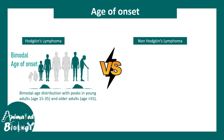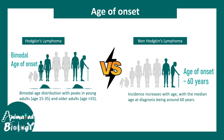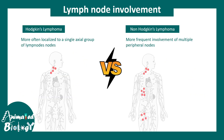Age distribution for Hodgkin's lymphoma is bimodal — that means the age groups of 15 to 35 and adults older than 55 are vulnerable. Whereas non-Hodgkin's lymphoma is generally found in people who are more than 60 years of age. So age distribution is also different.